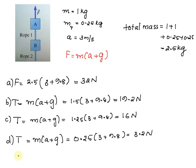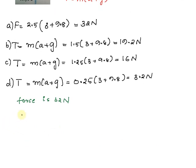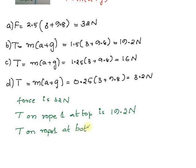As a conclusion, we can write the force acting on the system is 32 newtons. The tension on rope 1 at top is 19.2 newtons. Tension T on rope 1 at bottom is 16 newtons, and tension T on rope 2 is 3.2 newtons.